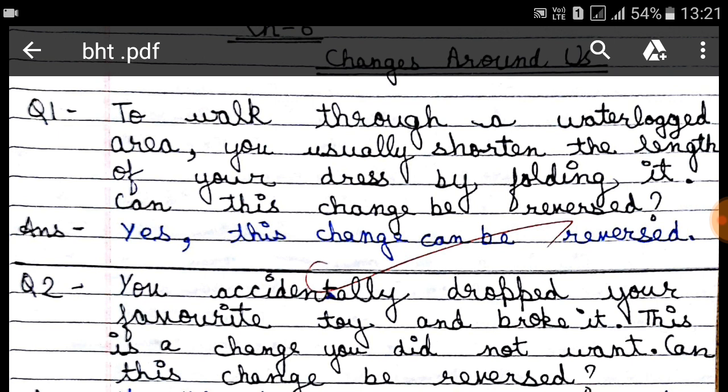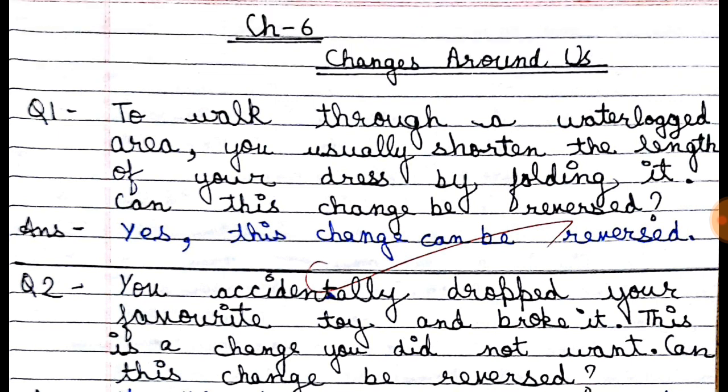The first question is: to walk through a waterlogged area, you usually shorten the length of your dress by folding it. Can this change be reversed? When you are in a waterlogged area, it means a place that is filled with water. You fold up your dress or jeans from the bottom. Yes, this change can be reversed — we can unfold it back. So this change can be reversed.